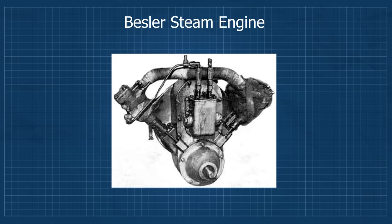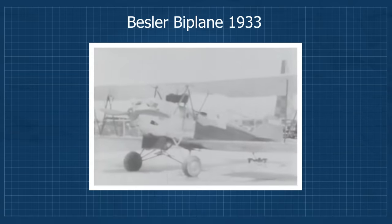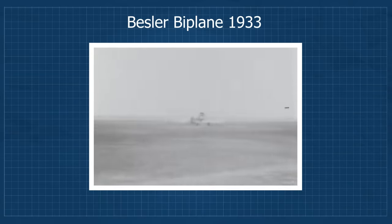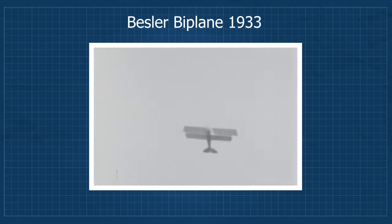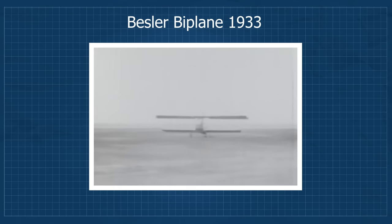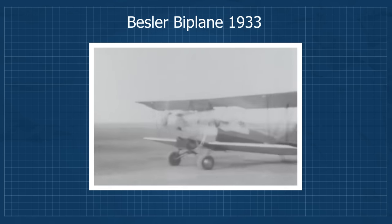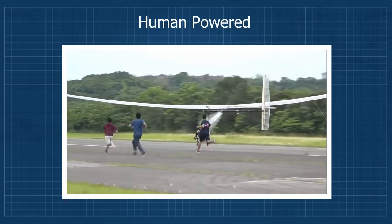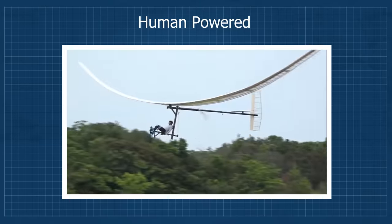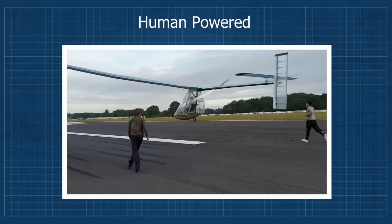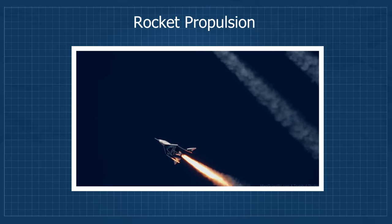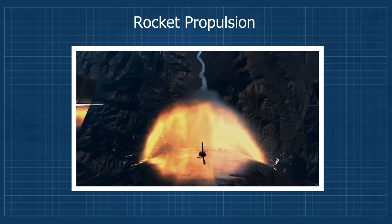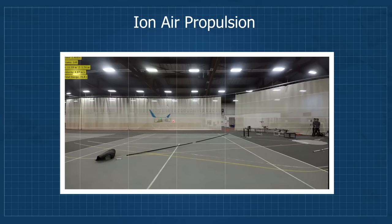Going back in time, we have steam-propelled aircraft. One of the most successful was the Bessler biplane, but this steam engine was heavier, less efficient, and more complex than a conventional internal combustion engine, so it was never put into production. Human-powered aircraft is another peculiar type of propulsion — completely possible, but only in good weather conditions. Then we have rocket propulsion, to go at the fastest speed possible but only for a brief moment. And finally, there is ion propulsion, a very new technology.